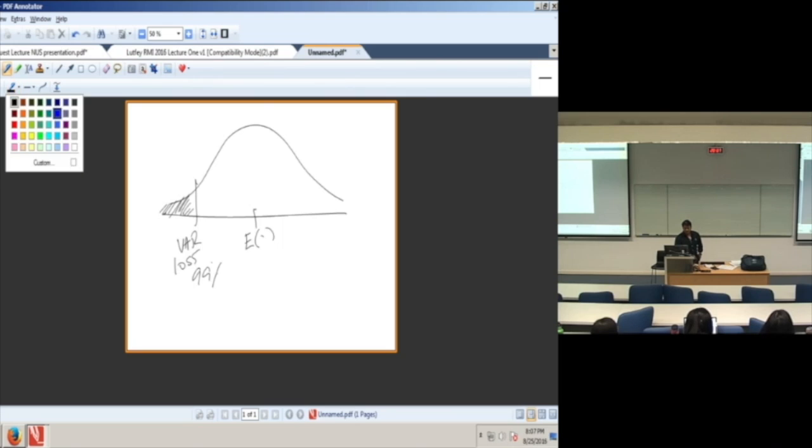A question that the board could ask is, alright, you're telling me that there's only a 1% chance that you could see a value lower than this number. My question to you is if this extremely unlikely event were to occur, then what?